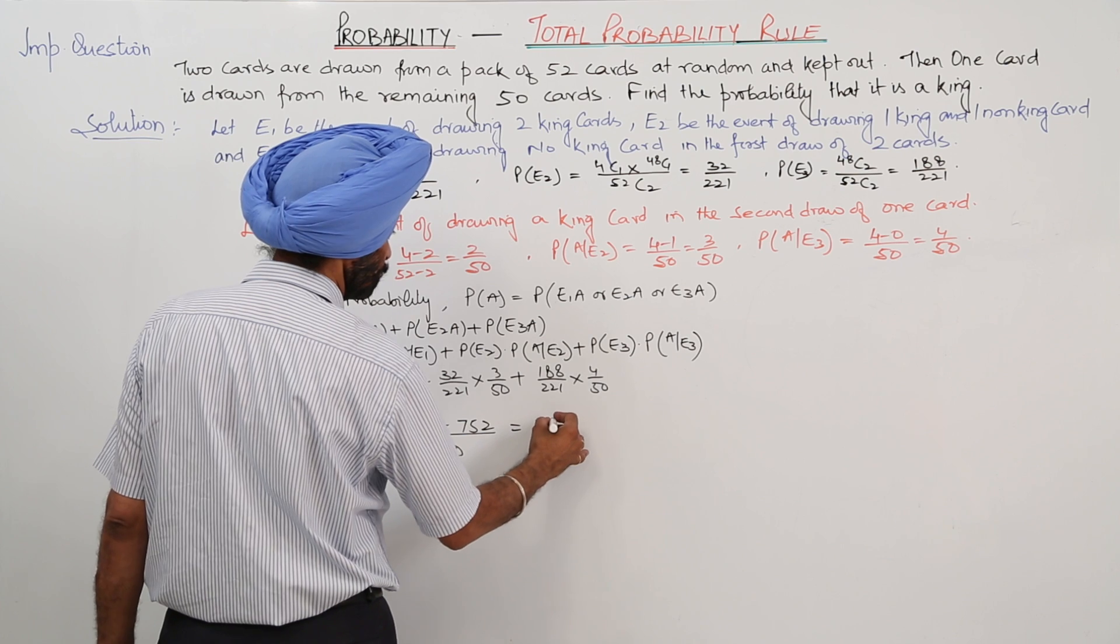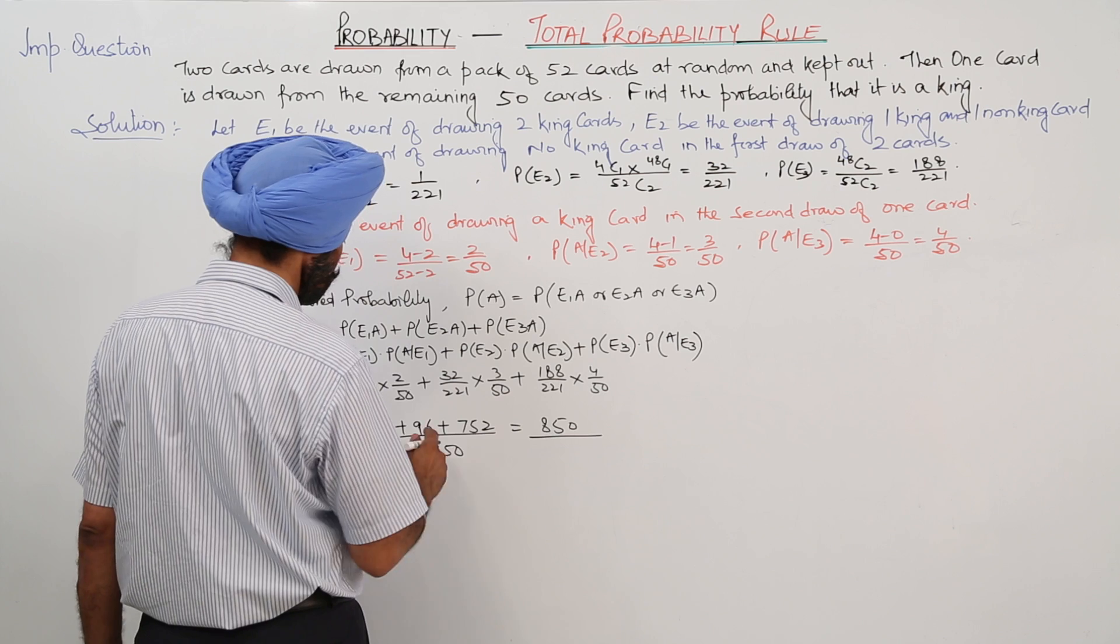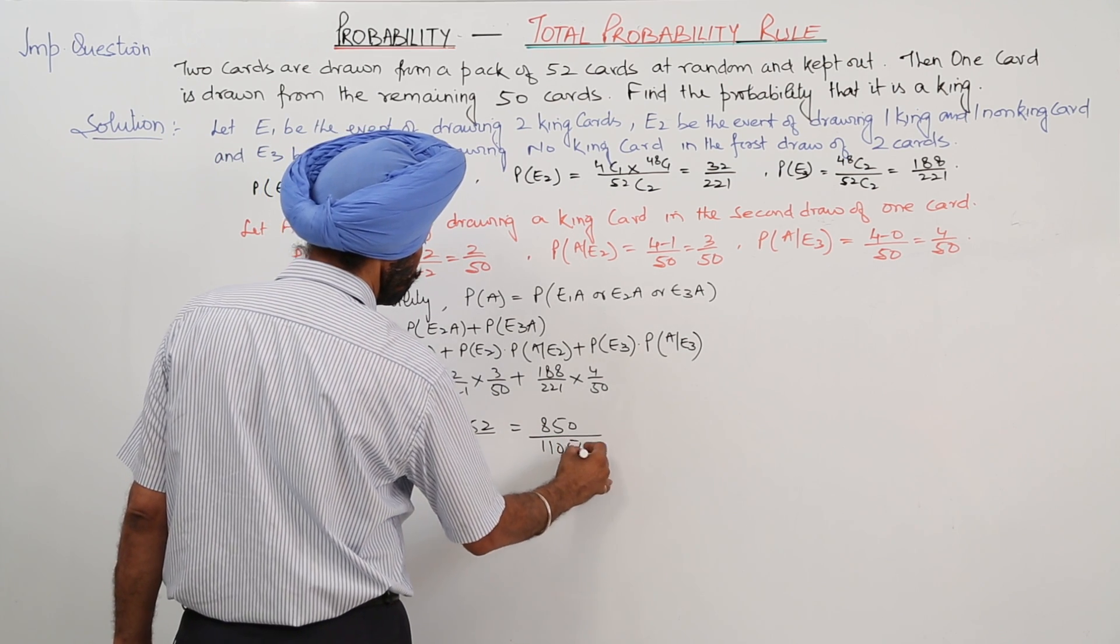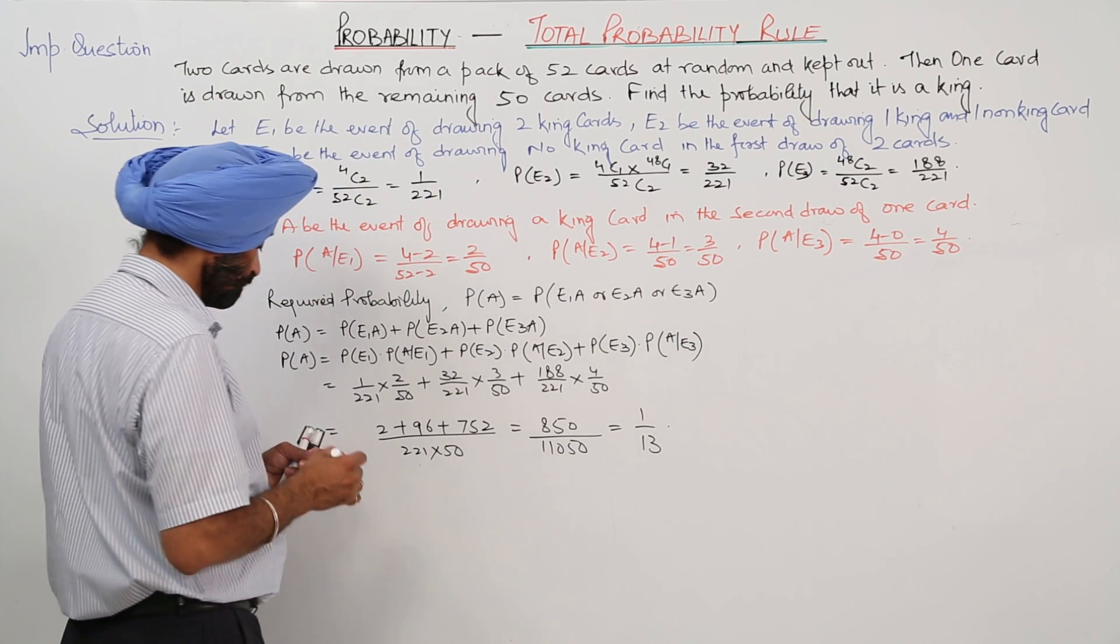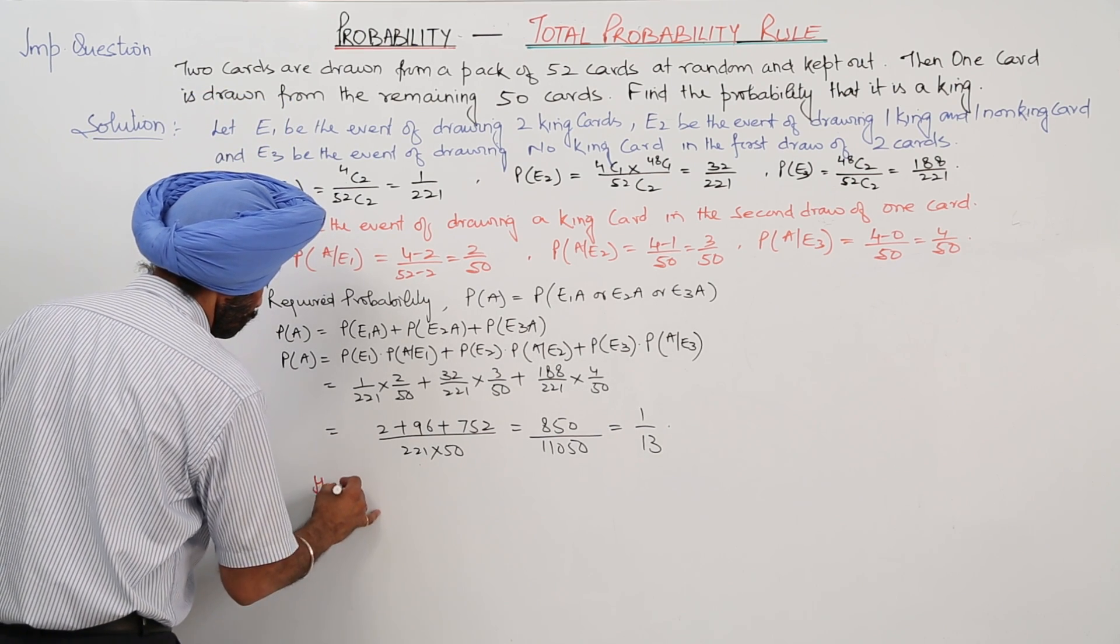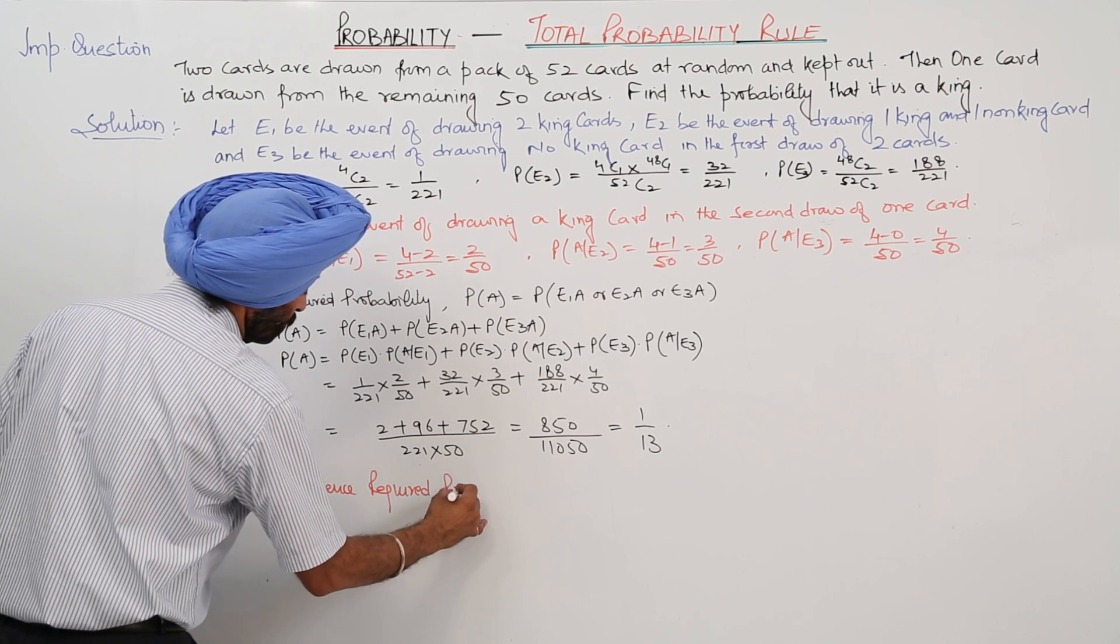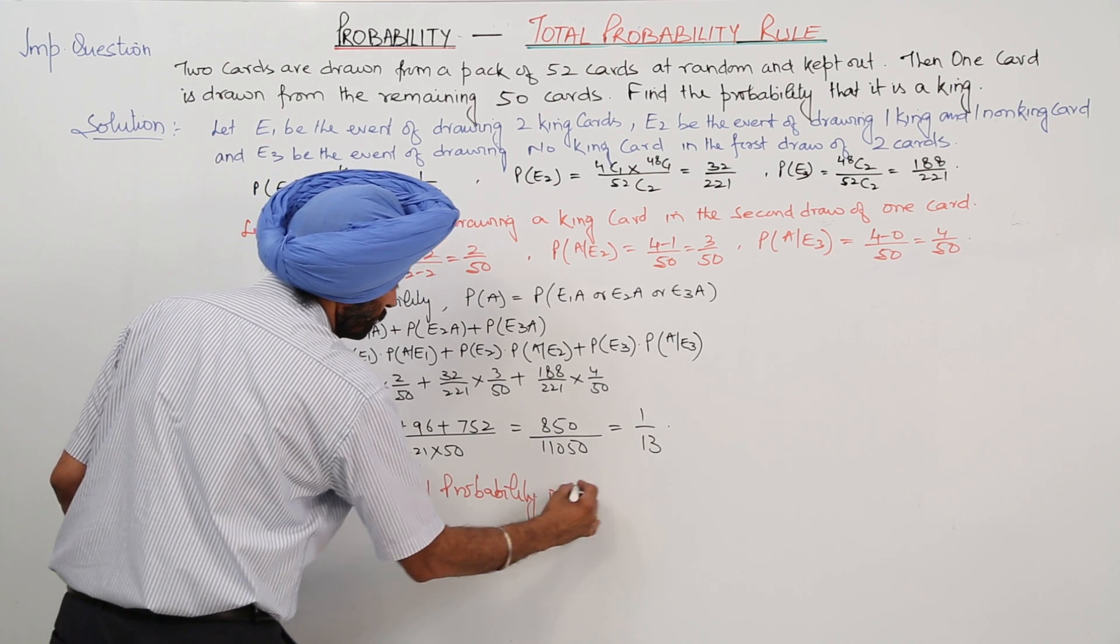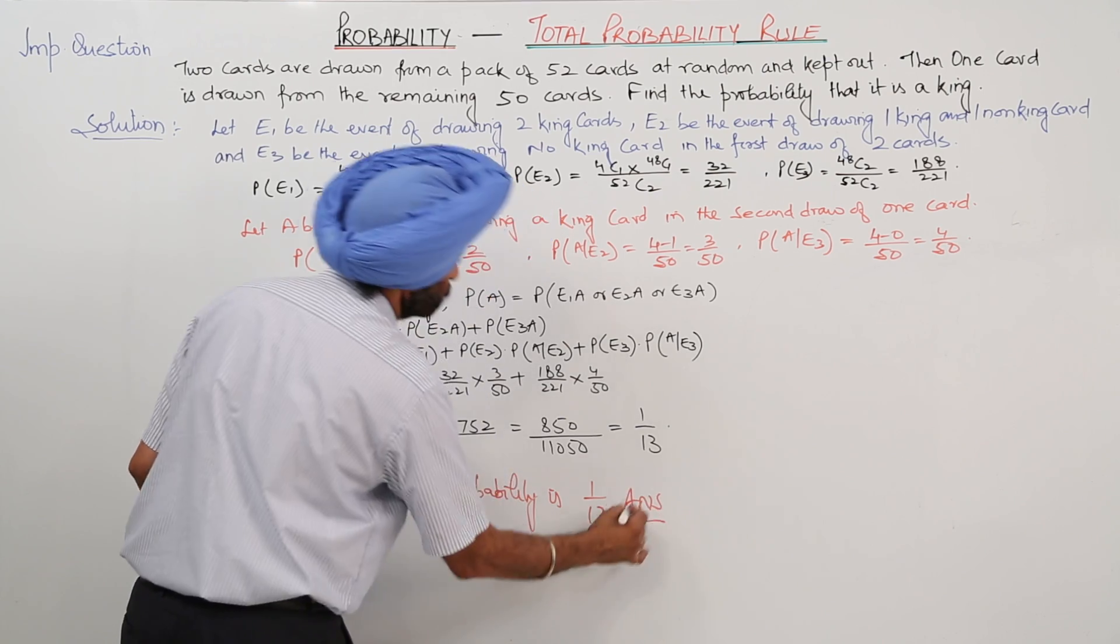Now this becomes 850 upon 11050, or this is 1 upon 13. Hence required probability is 1 upon 13, and this is the answer.